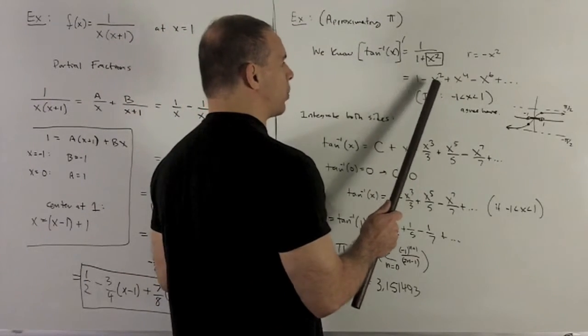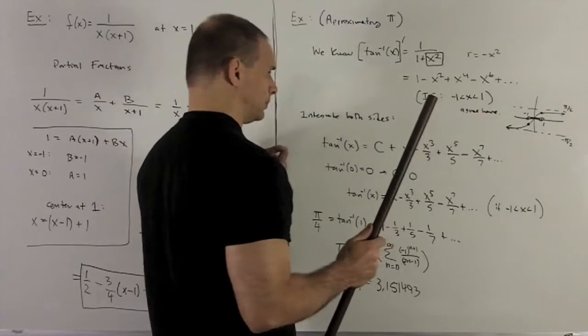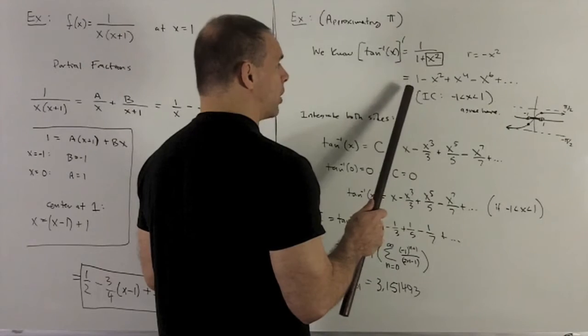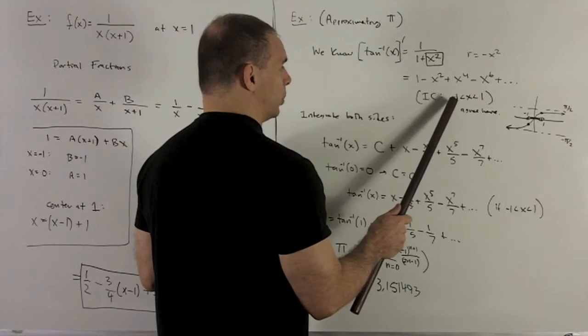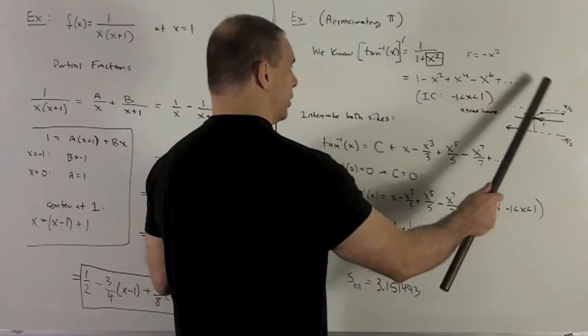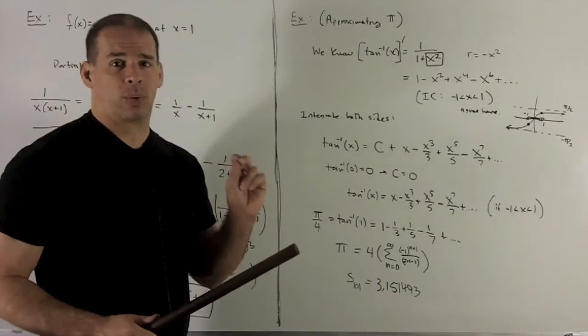So I can rewrite this as 1 minus x squared plus x to the fourth minus x sixth, and so on. The only catch is, if I do this, then I'm throwing away everything except for the points between minus 1 and 1. Because that's the only region where our power series is going to be defined. But that's going to be okay for what I need to work with.